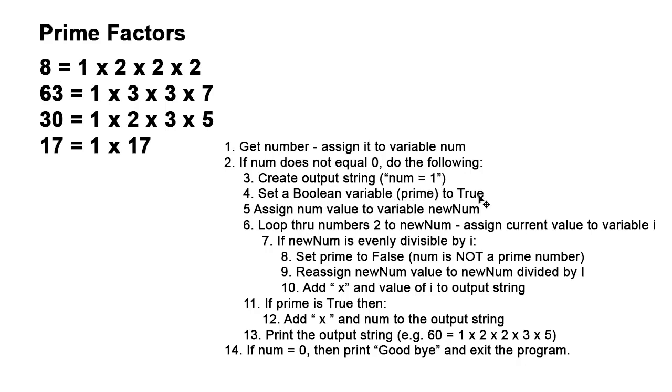Then I'm going to loop through the numbers from 2 to newNum and I'm going to assign through that loop each number in that range to a variable called i. If that newNum is evenly divisible by i, then I'm going to set prime to false.